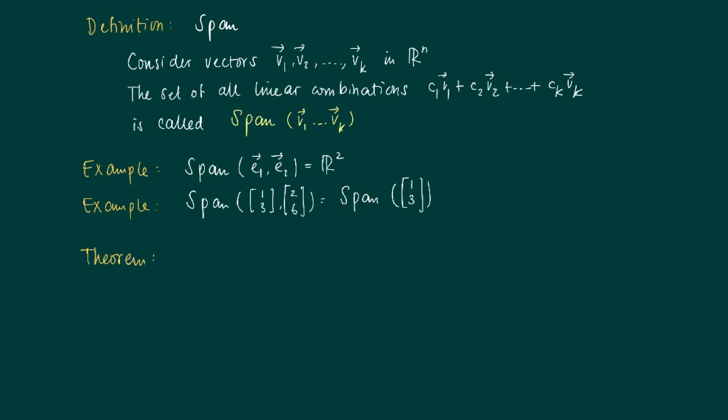We have the following theorem: the image of T, the image of a linear transformation T(x) = Ax, so instead of writing the image of T, we may also write the image of A.